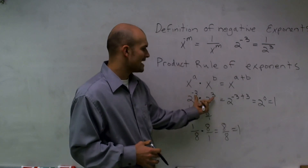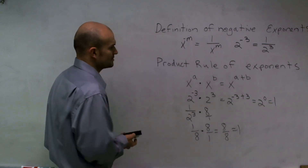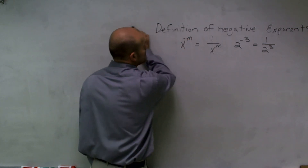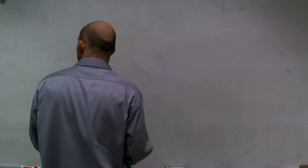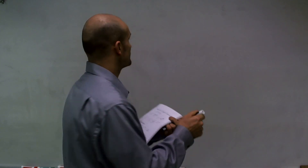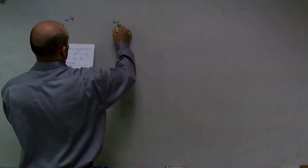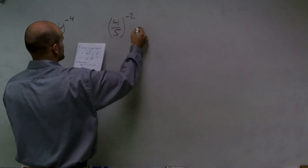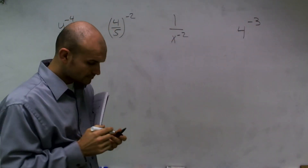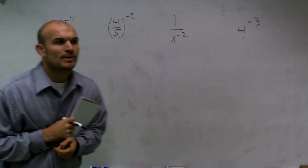By using the product rule, when we add the exponents they give us 2 to the 0. Now let's look at some practice problems: y to the negative 4, four-fifths to the negative 2, 1 over x to the negative 2, and 4 to the negative third. Please write these four problems down and then I'll show you how to solve them.